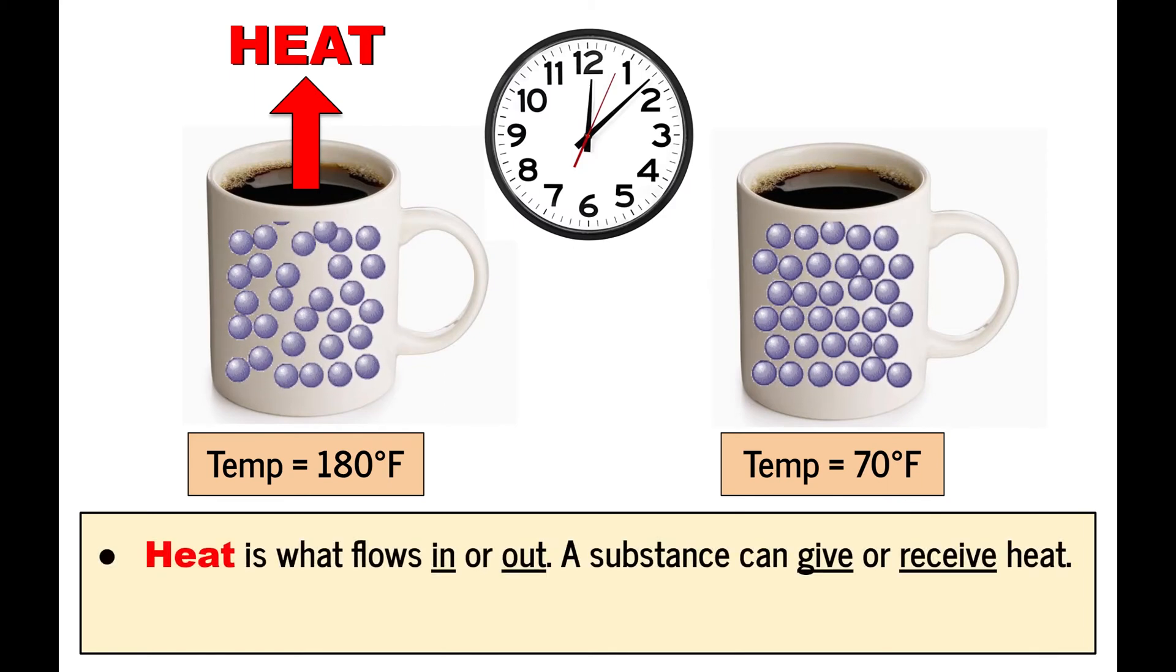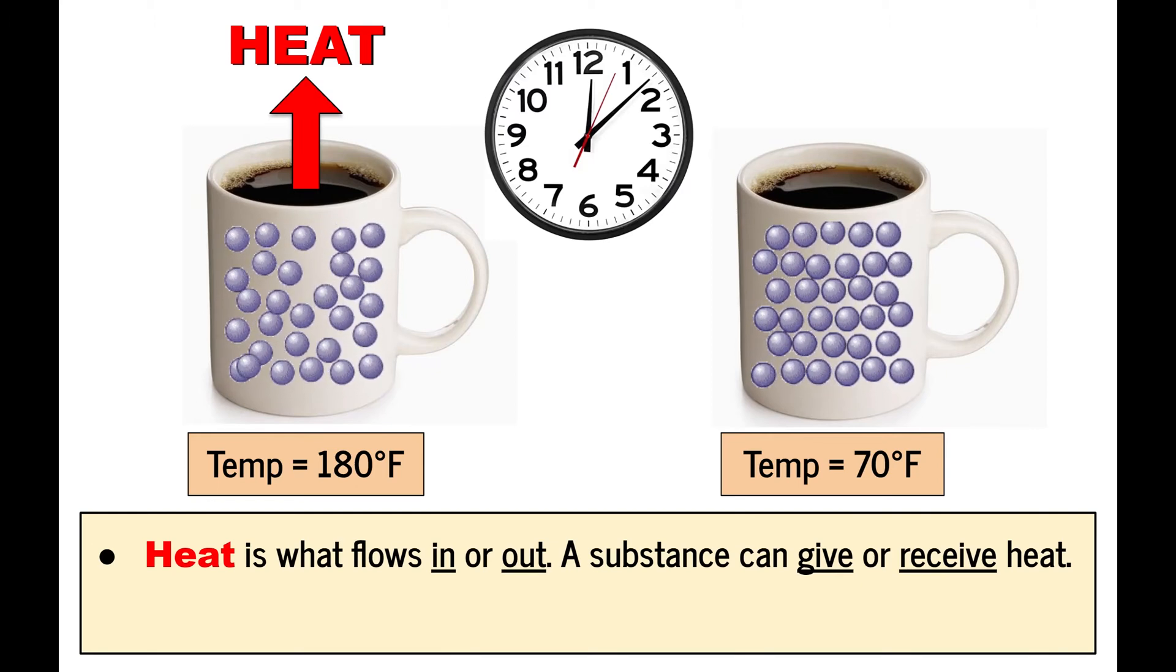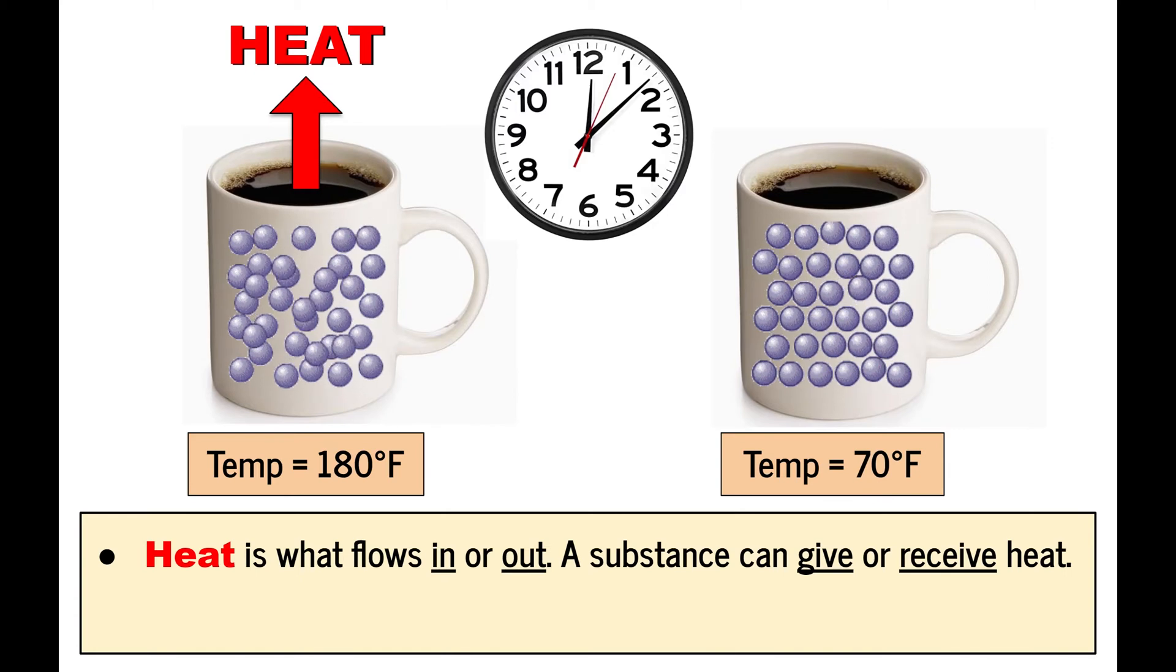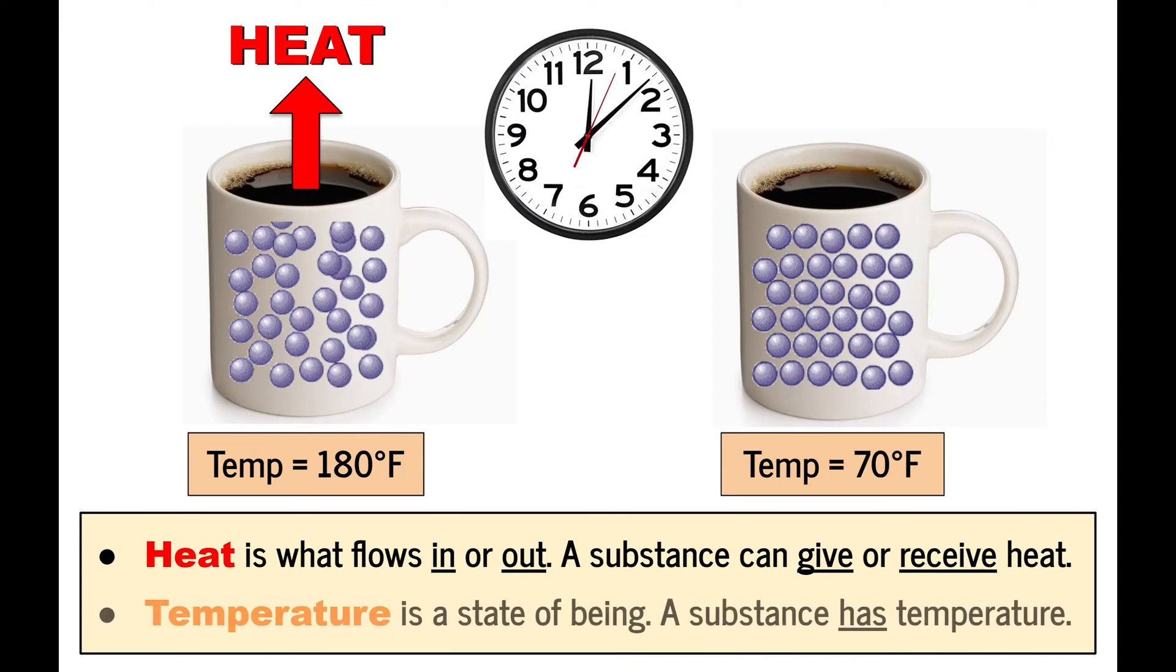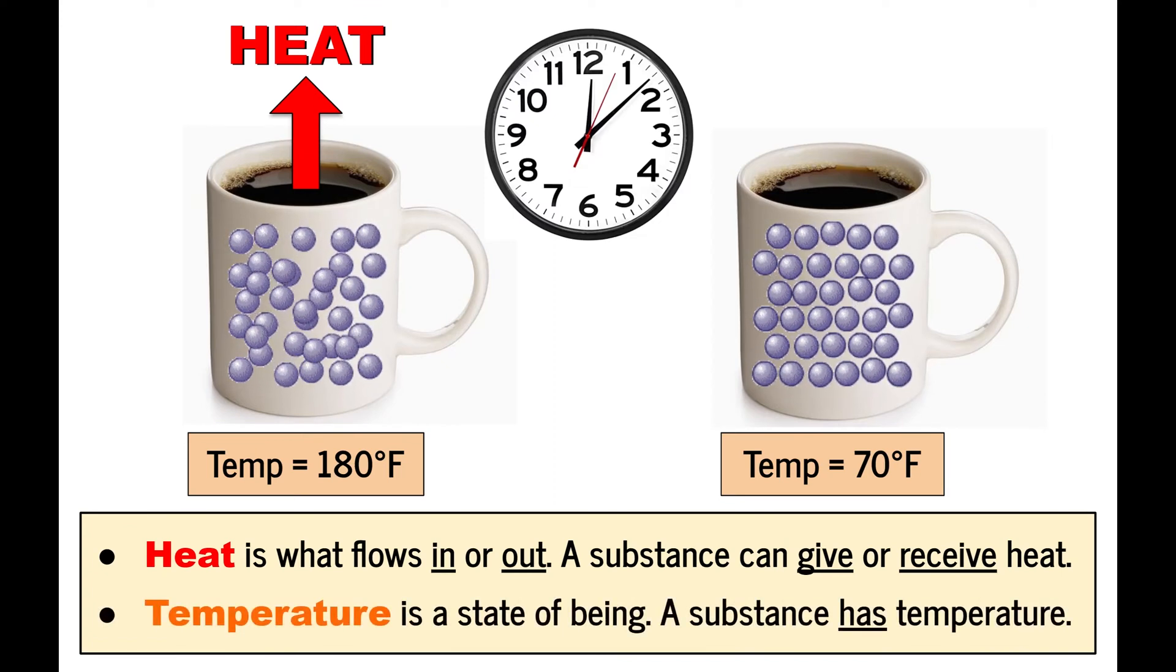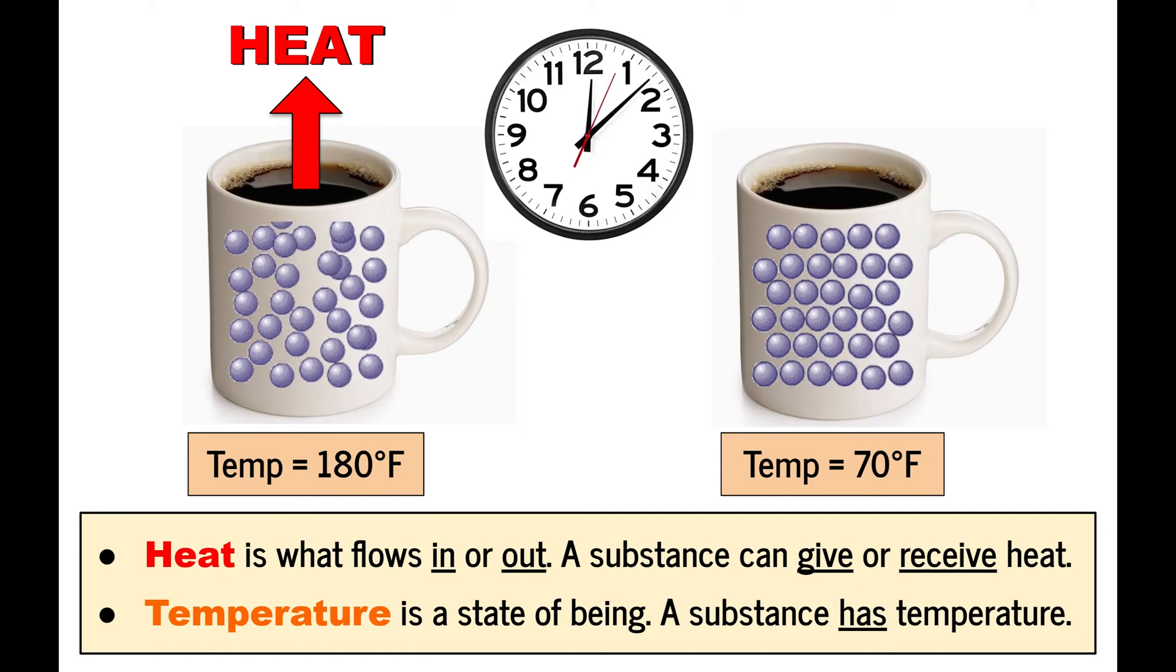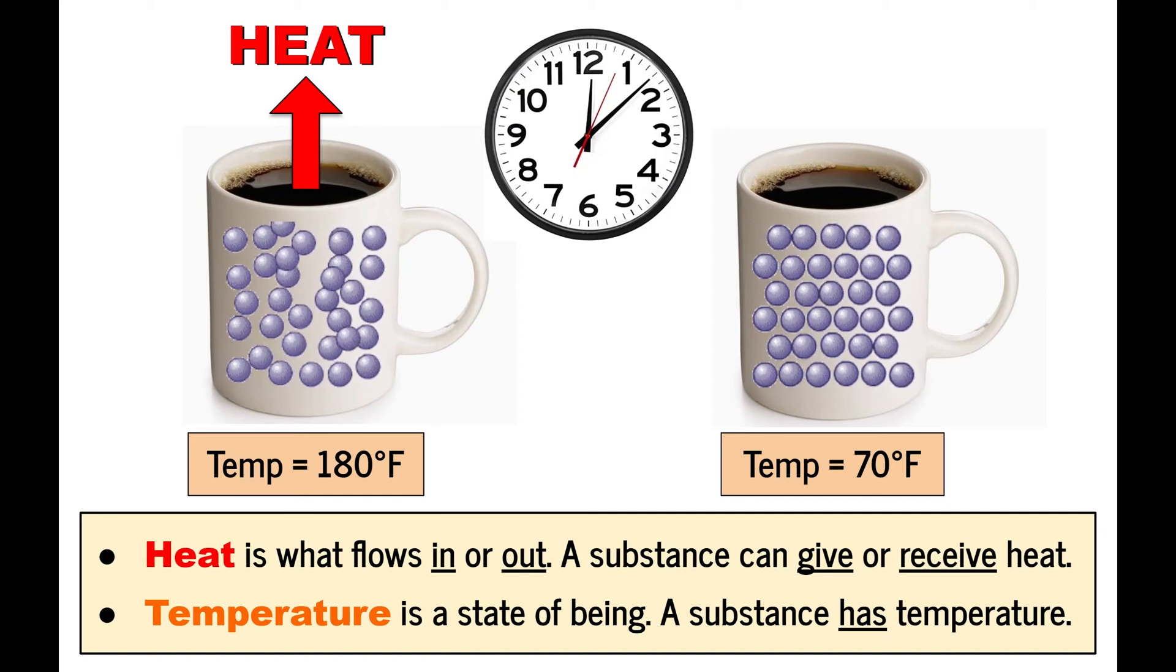You'll notice here that heat is what's flowing in or out of the substance. You wouldn't say that a substance has heat. Instead you'd talk about a substance giving away heat or receiving heat from the environment. On the other hand, temperature is a state of being. A substance can have a temperature, but it can't have heat because heat is what it gives or receives. So that's the difference between the two words.